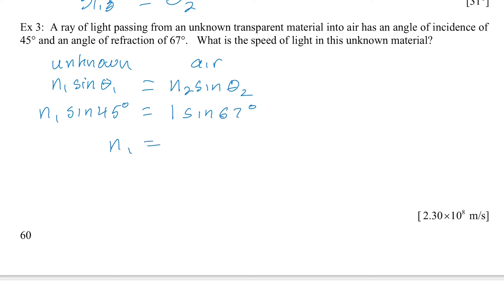So to get N1, I'm just going to take the sine of 67. And I'm going to divide by the sine of 45 to find out what N1 is. And I find out that N1 is 1.3.